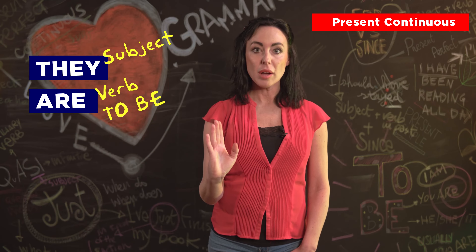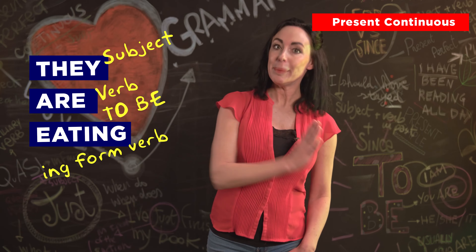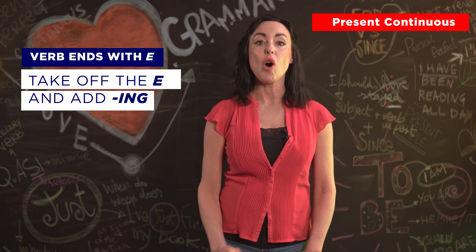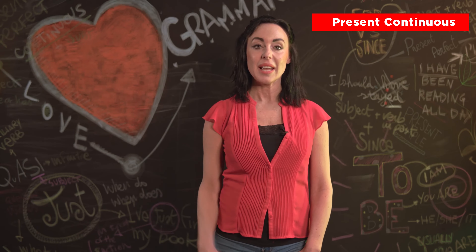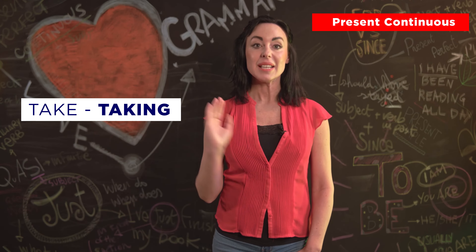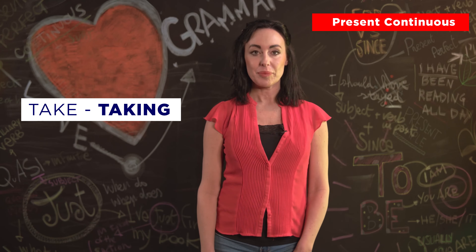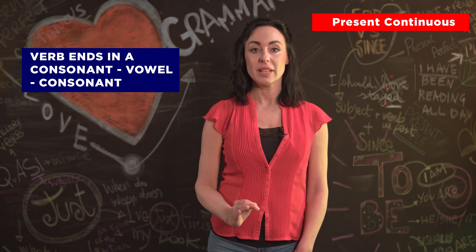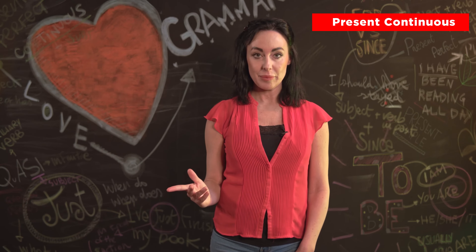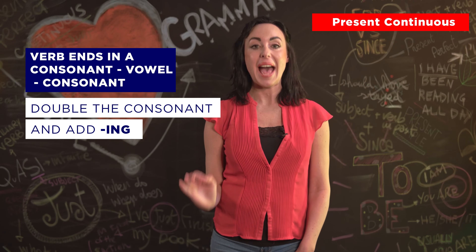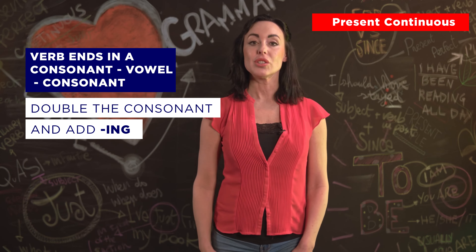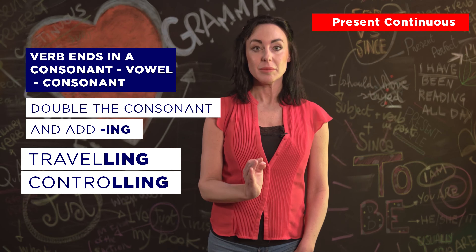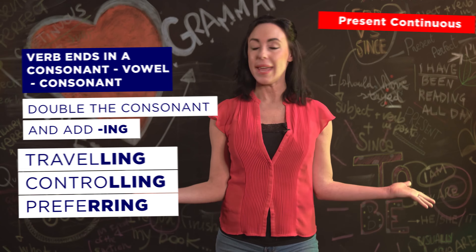'They are eating pizza.' If the verb ends with the letter -e, we take off the -e and add -ing: 'take' becomes 'taking.' If the verb ends in consonant-vowel-consonant — like 'travel,' 'control,' 'prefer' — we double the consonant and add -ing: 'traveling,' 'controlling,' 'preferring.' Easy!